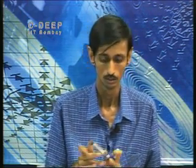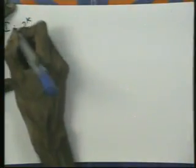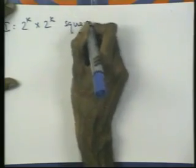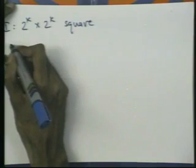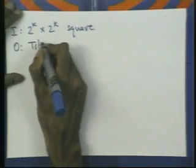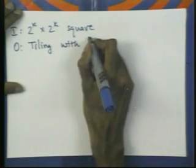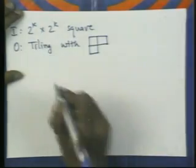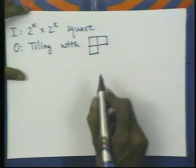We will continue with our discussion of algorithm design techniques by looking at some other problems which are fairly interesting and where the divide-and-conquer paradigm gives better results. The first one is the following. You are given a 2^k × 2^k square. What you want as output is a tiling. What do I mean by tiling? I must fill up the squares with pieces that look like an L-shaped tromino — each piece covers exactly 3 squares arranged in an L shape.